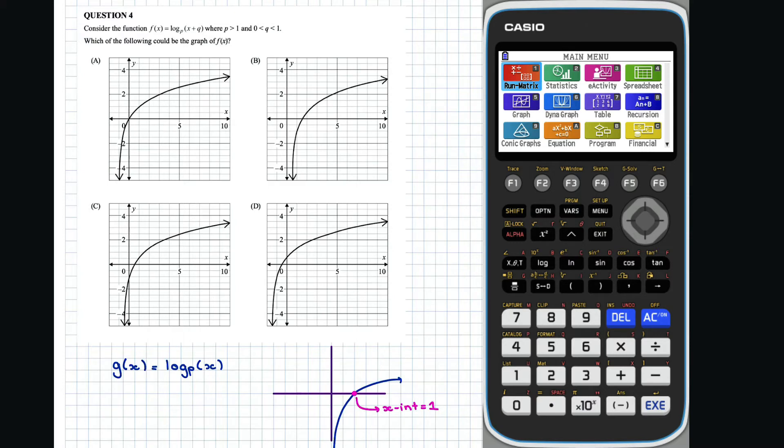We are given that q is between 0 and 1, so the graph will be translated left some amount between 0 and 1. Option C looks correct as its x-intercept is between 0 and 1. Checking the others to be sure shows that each option has been shifted too far to the left or too far to the right. So C is the correct option.